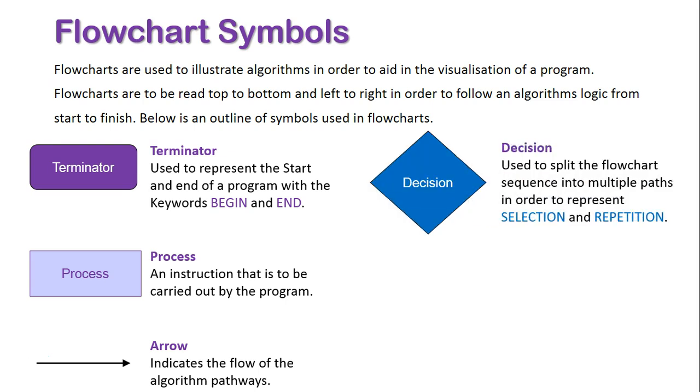After this we have a decision, and these are used to split flowcharts sequence down multiple paths. So it is used in these control structures of selection and repetition. Within these actual diamonds usually has maybe a question or an actual case statement appearing, and this highlights the beginning of the different branching paths.